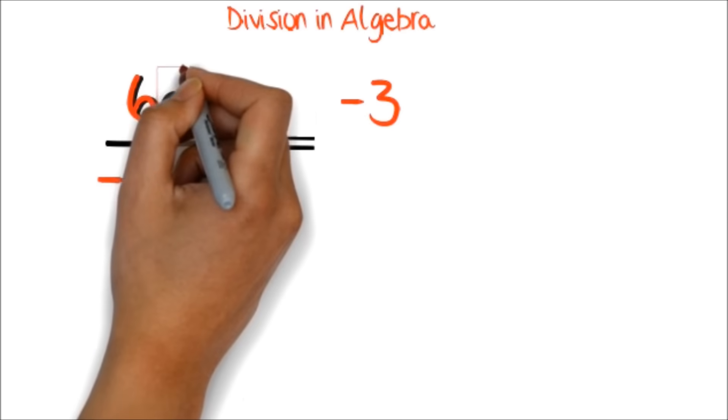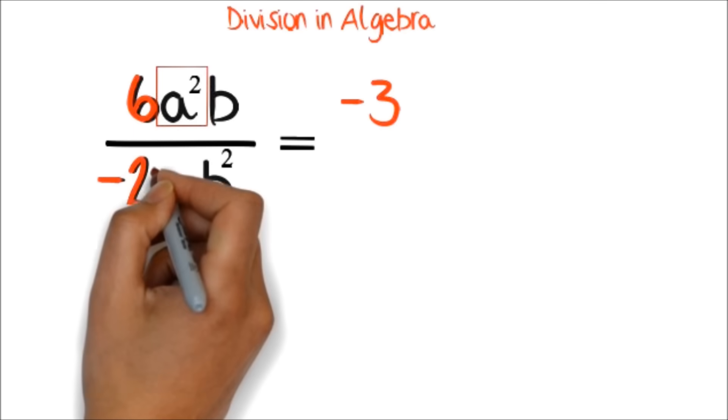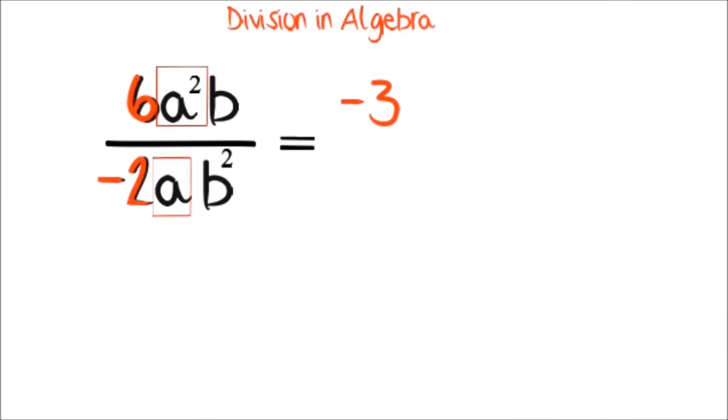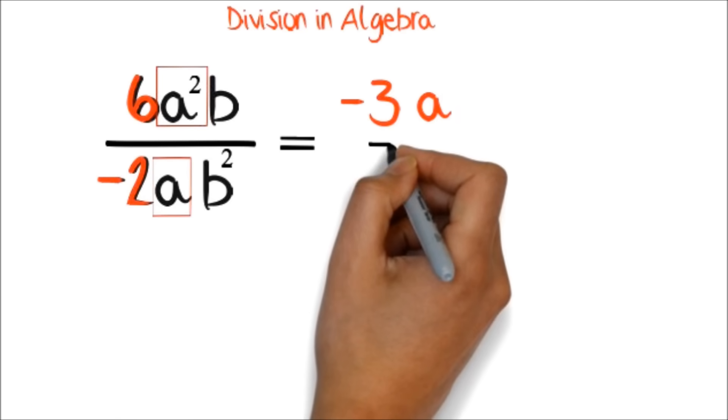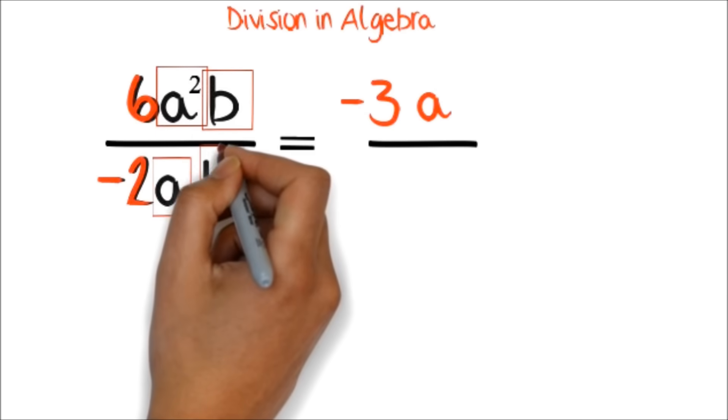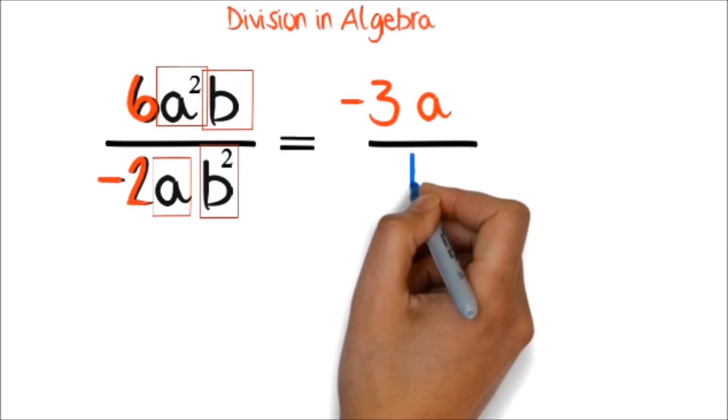Now, we say there are 2 a's at the top and 1 at the bottom. So, there will be 1 left at the top. There is 1b at the top and there are 2 at the bottom. So, there will be 1 left at the bottom.